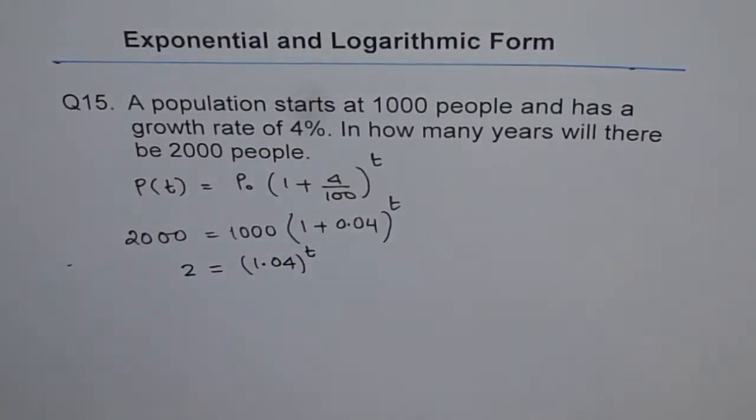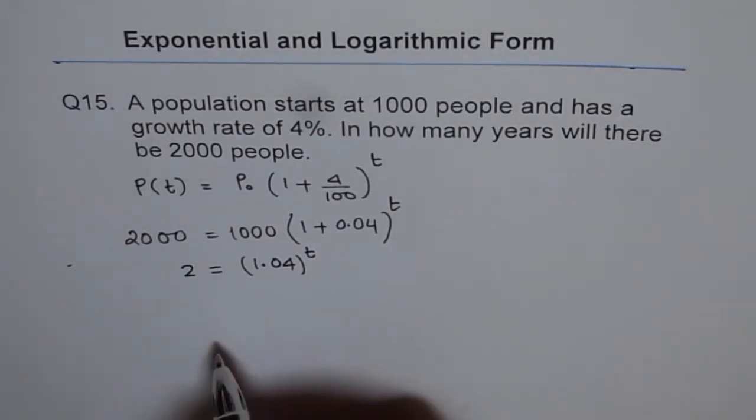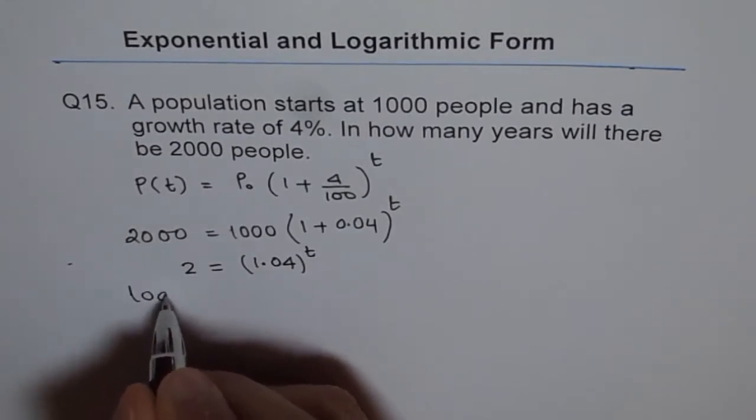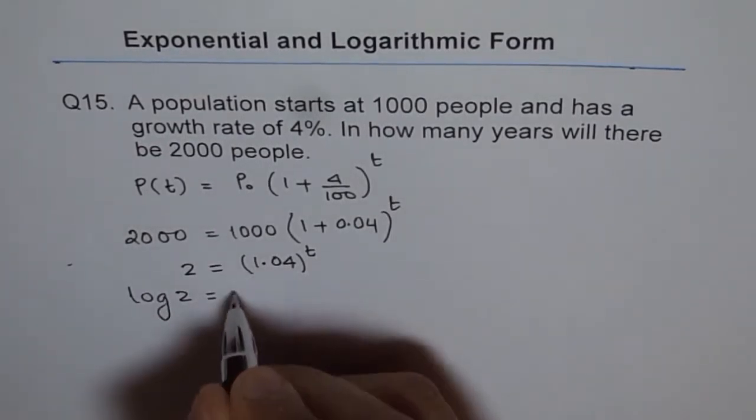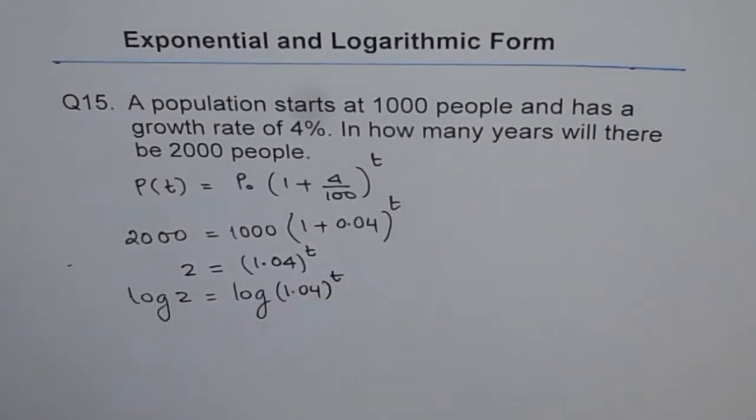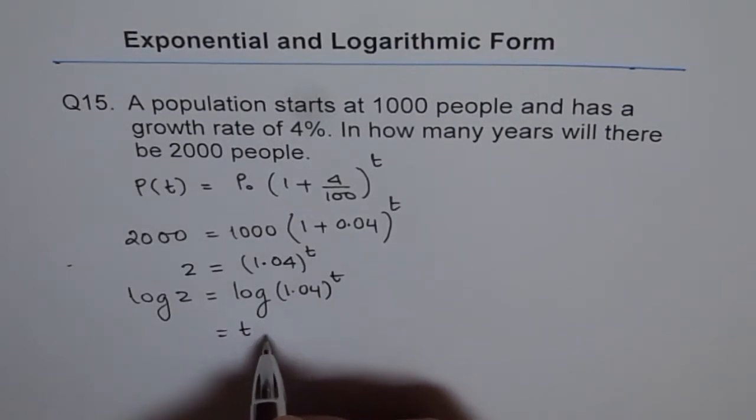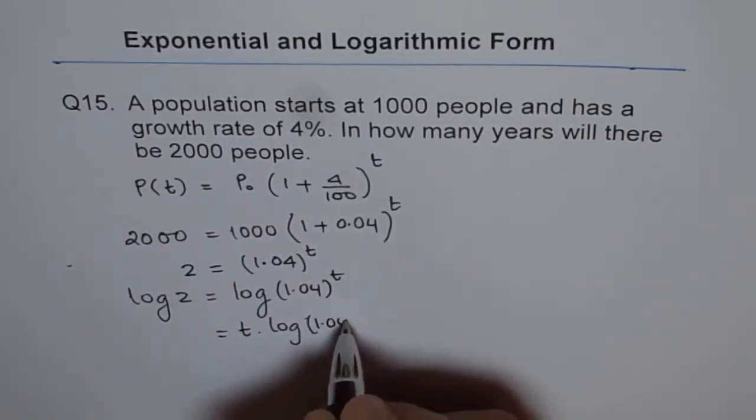To solve such equation, we can take log both sides and then find t using power rule. So we have log of 2 equals to log of 1.04 to the power of t. Now this is written as t times log of 1.04.